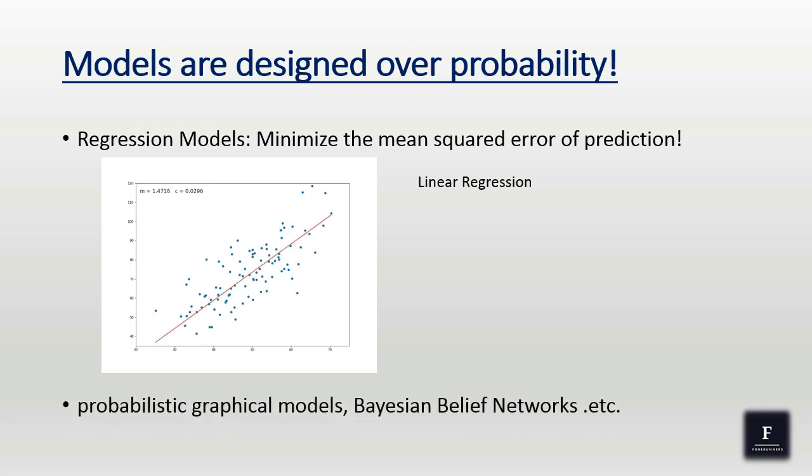Other examples also include the graphical models, probabilistic graphical models, Bayesian belief networks, and so on. As you can see, the model here tries to adjust the regression line in order to properly separate the instances of class 0 and class 1.